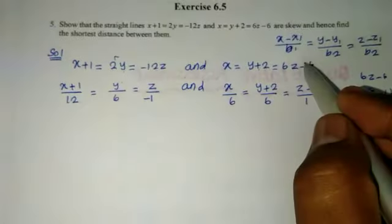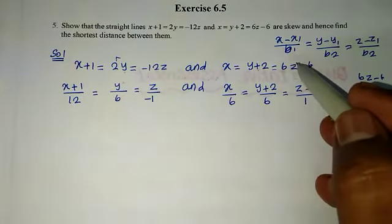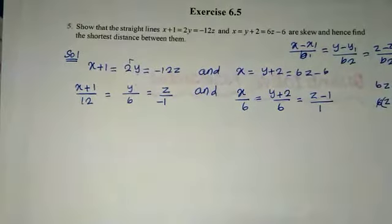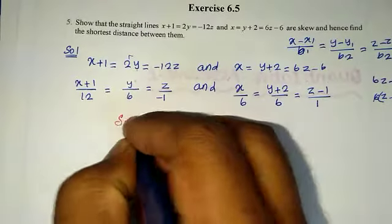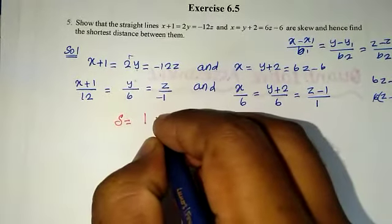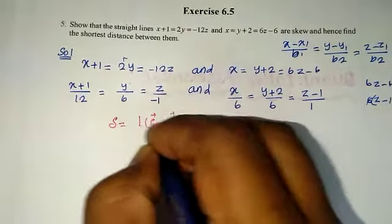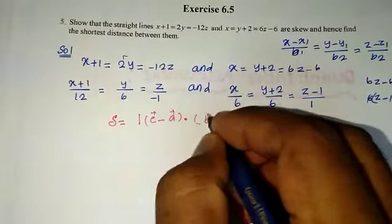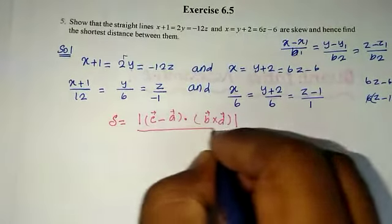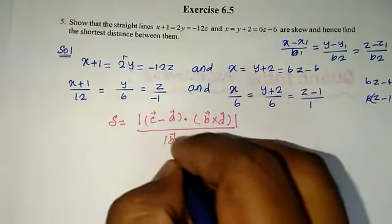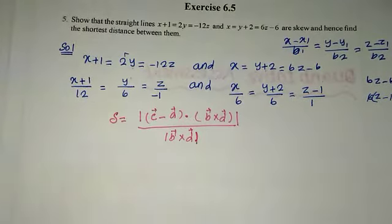Comparing to standard form, we extract the four required values. The shortest distance between skew lines is equal to the modulus of (c vector minus a vector) dot (b vector cross d vector), divided by the modulus of (b vector cross d vector). This is the vector formula.